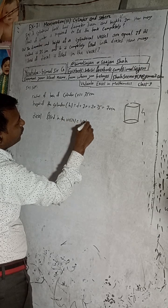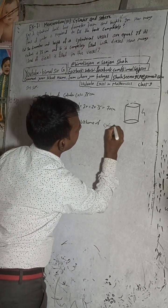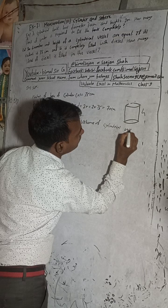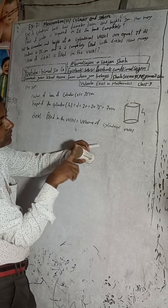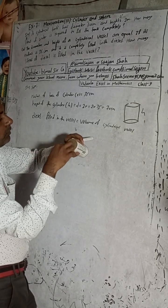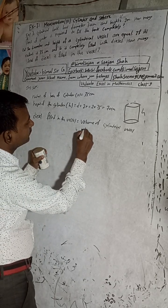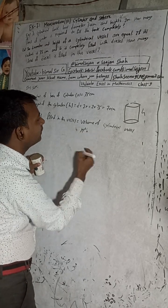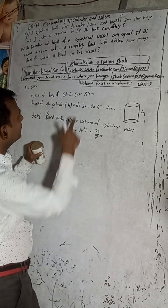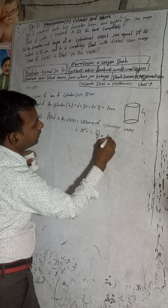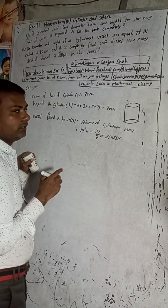The amount of diesel filled in the vessel equals the volume of the cylindrical vessel. The volume is the area of the cross-section — which is a circle, pi r squared — multiplied by the height. So the volume equals 22/7 times 35 squared times 70.